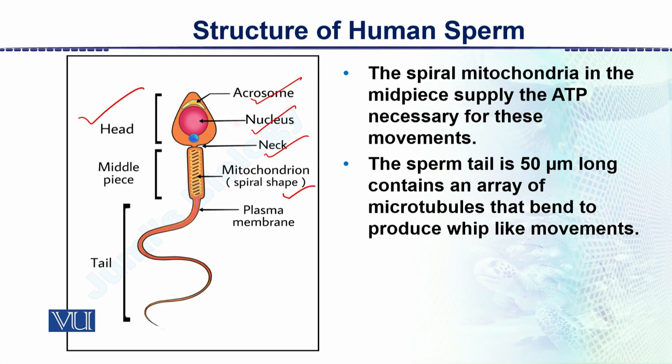This is the complete structure of the sperm — the head, the midpiece, and ultimately a long tail. We have understood the details with the electron microscope, including the midpiece, the tail, and the microtubules. This is the complete structure of the sperm.